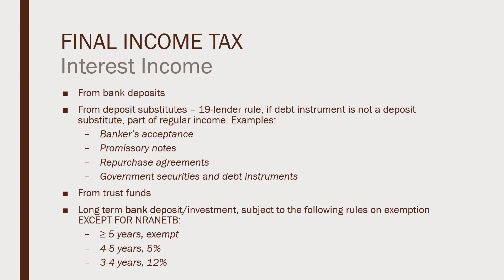The first type of income subject to final tax is interest income from bank deposits, deposit substitutes, and trust funds. Examples of deposit substitutes include bank risk acceptances, promissory notes, repurchase agreements, government securities, and debt instruments. There are rules on exemption for long-term bank deposits or investments, except for NRA-NETB. The rate for interest income earned by NRA-NETBs shall remain 25% regardless of whether it is short-term or long-term. For other taxpayers — resident citizens, NRCs, RAs, and NRA-ETBs — the rules on exemption apply.